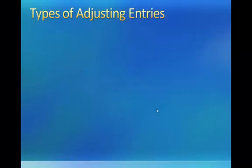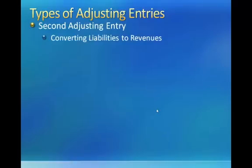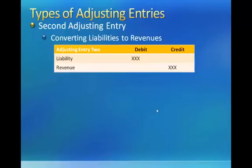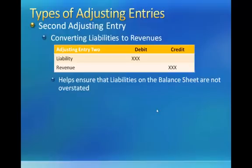The second adjusting entry converts liabilities to revenue. This entry is necessary when cash is received prior to the revenue being earned. This entry involves a debit to a liability account and a credit to a revenue account. Recording this type of adjusting entry helps ensure that liability account balances reported on the balance sheet are not overstated. It also helps ensure that revenues recorded on the income statement are not understated. Consequently, if this adjusting entry is not made, net income is understated.